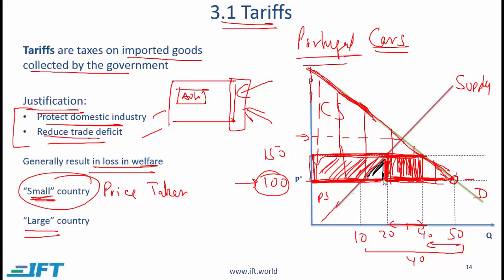These two triangles represent the loss in welfare to the country — this area is lost and not going to anyone. Connecting this with earlier economics material, this is called deadweight loss, and in this reading it is called the loss in national welfare. This is what we mean by the statement that tariffs generally result in a loss in welfare.